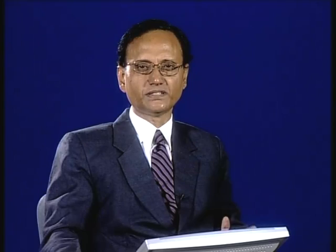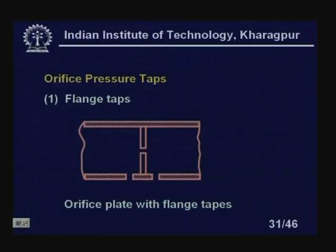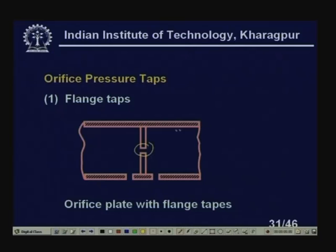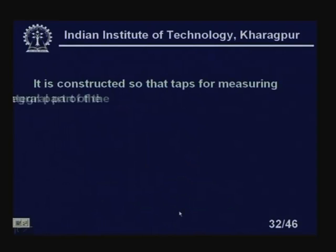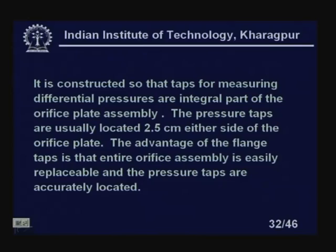There are various pressure taps available for the orifice. In this lesson we discuss three: flange taps, D and D/2 taps, and vena contracta taps. Flange taps are constructed so that the taps for measuring differential pressure are an integral part of the orifice assembly, usually located 2.5 cm either side of the orifice plate. The advantage of flange taps is that the entire orifice assembly is replaceable and the pressure taps are accurately located.